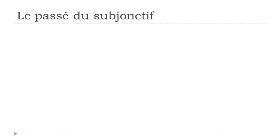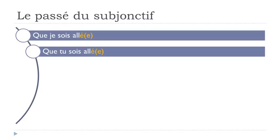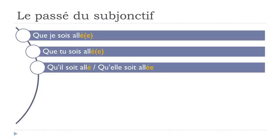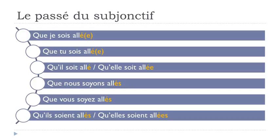So the full passé du subjonctif for aller goes: que je sois allé, que tu sois allé, qu'il soit allé, qu'elle soit allée, que nous soyons allés, que vous soyez allés, qu'ils soient allés, qu'elles soient allées. Note there is no liaison when you have qu'il or qu'elle.